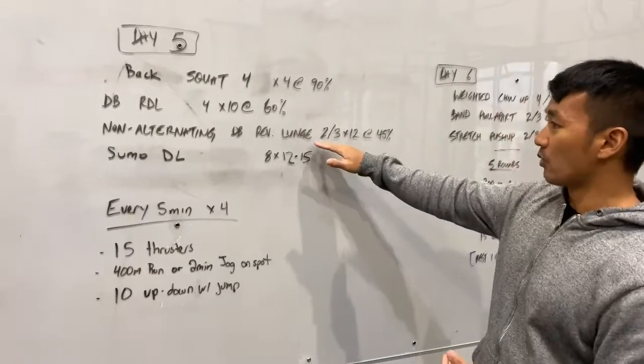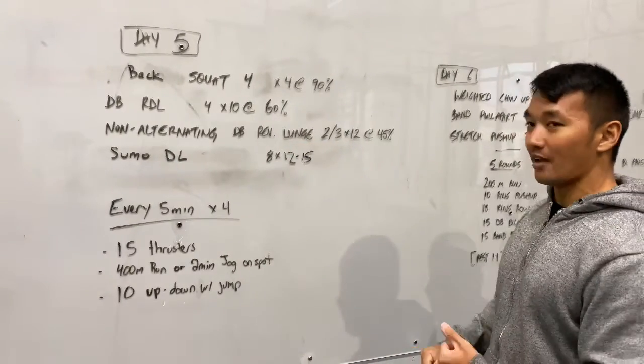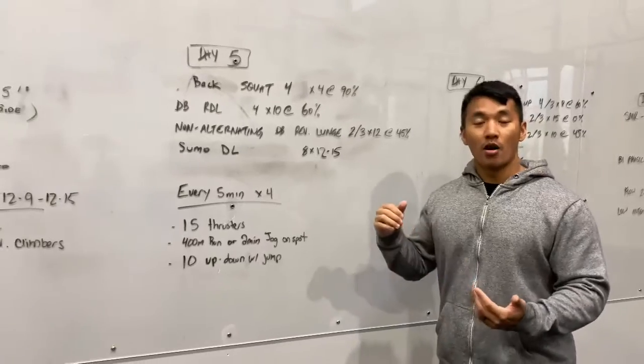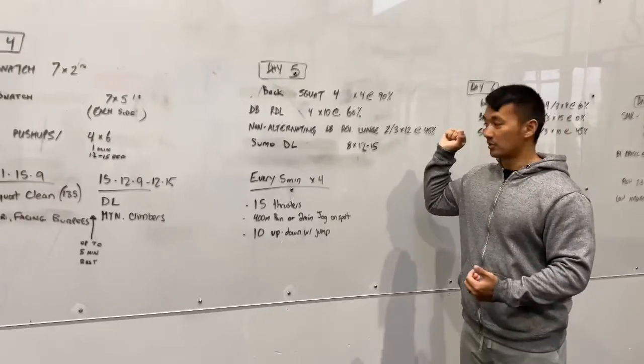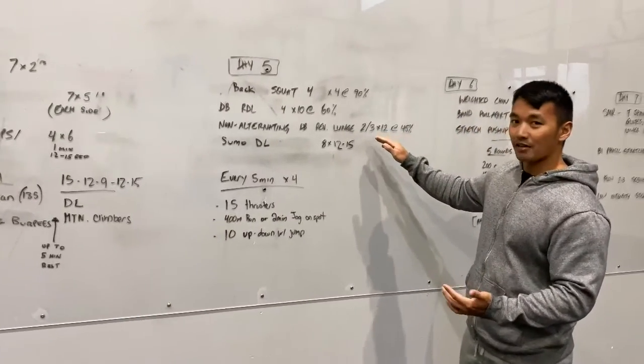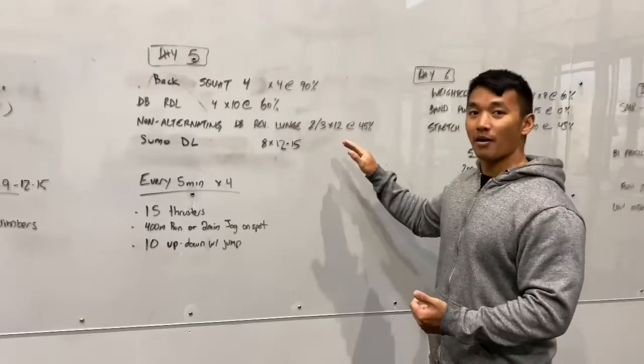Moving on, we're going to the dumbbell reverse lunge or barbell in back rack position. Depending how you're feeling, two to three sets of 12 reps.